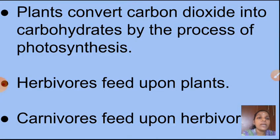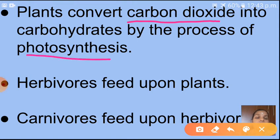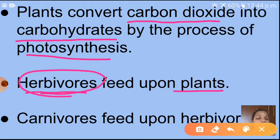Now let's discuss the steps of the carbon cycle. First step: plants convert carbon dioxide into carbohydrates by the process of photosynthesis. During photosynthesis, with the help of sunlight, in the presence of chlorophyll, plants convert carbon dioxide into carbohydrates — that means glucose, their food. Next, herbivores feed upon plants, and then carnivores feed upon herbivores.